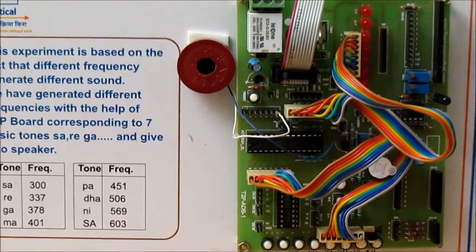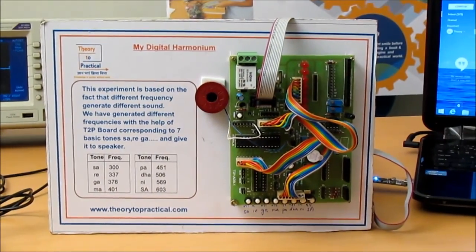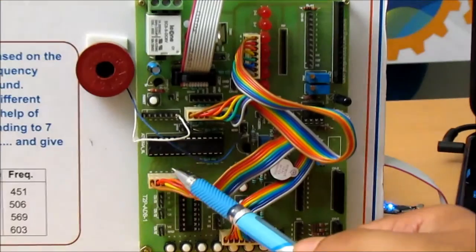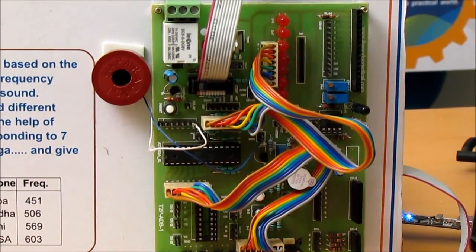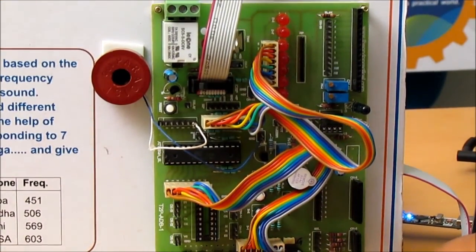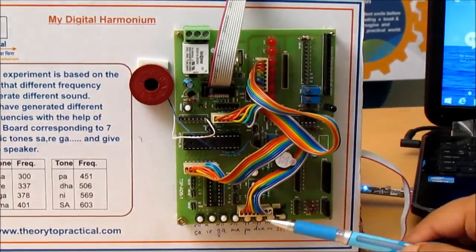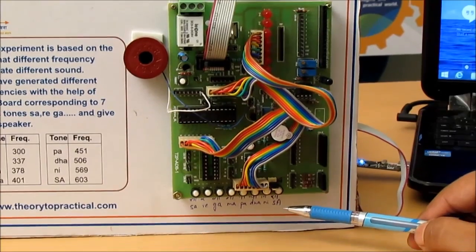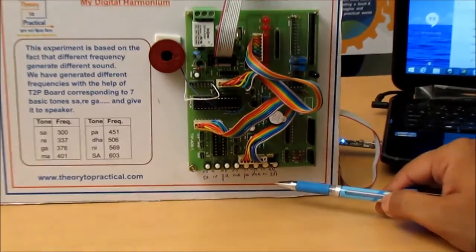We have generated different frequencies through this microcontroller IC and give it to this speaker. We have eight keys: seven for sa, re, ga, ma, pa, dha, ni, and the last eighth one is for the capital sa, that is high pitch sa.